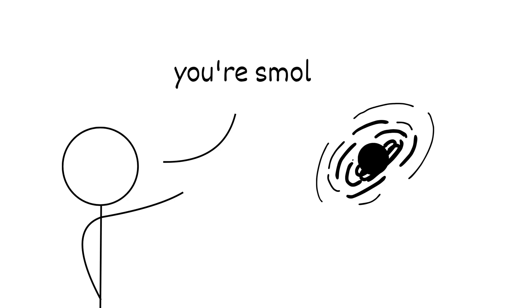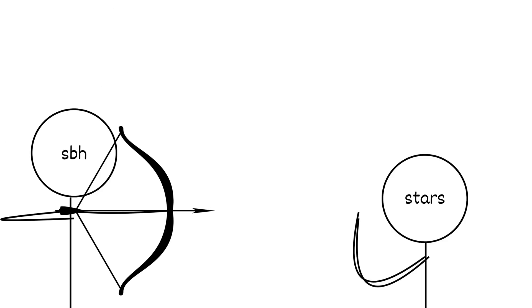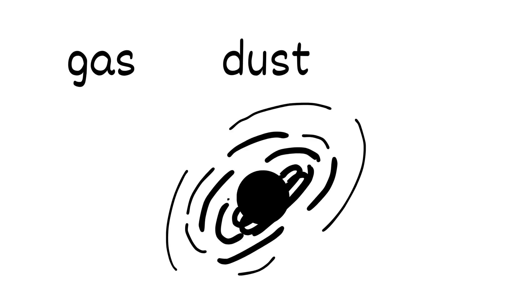It's small by black hole standards, but unbelievably heavy. Cram a few Suns into something the size of a city. That's the level of insane gravity we're talking about. They don't go around hunting things. They just sit there, quiet, invisible, pulling in gas and dust, or swallowing any unlucky stars that wander too close.